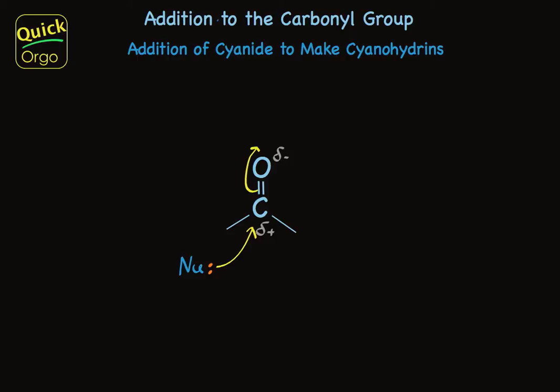Nucleophilic addition to carbonyl, as I've pictured here, is the key reaction of aldehydes and ketones. We picture a pair of electrons from the nucleophile being used to make a bond to carbon. That nucleophile is drawn to carbon because it has a partial positive charge, a result of polarizing the carbon-oxygen double bond because oxygen is more electronegative than carbon. While that bond to carbon is being formed, the pi bond breaks to put a pair of electrons on oxygen and a negative charge.